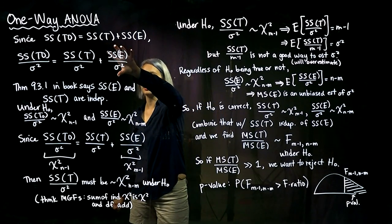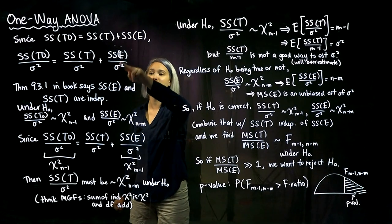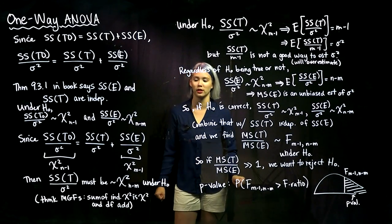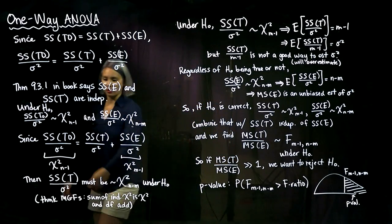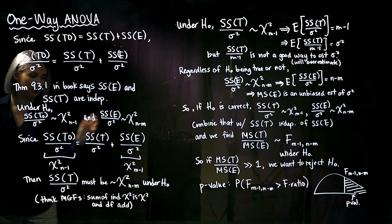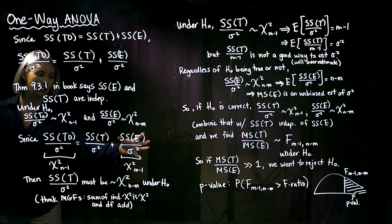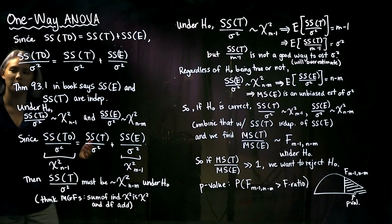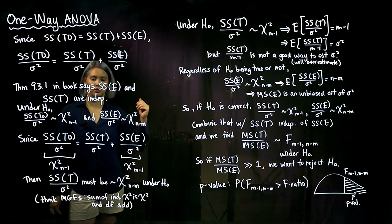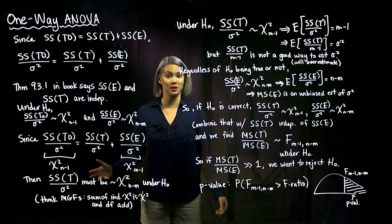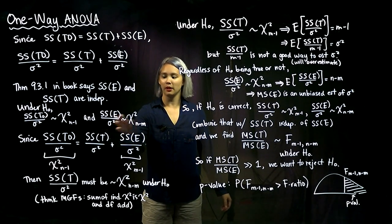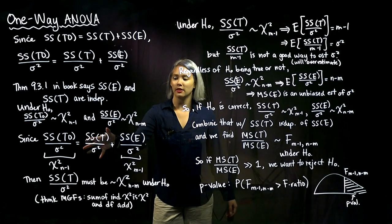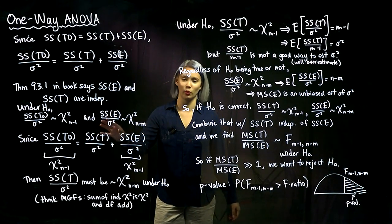Similarly, SSE divided by sigma-squared is also a chi-squared random variable with n minus 1 degrees of freedom. So this is a chi-squared random variable, and this is a chi-squared random variable, and they are independent of each other. If we remember back in our MGF — moment generating function — days from last semester, if we have a chi-squared random variable equal to something plus a chi-squared random variable, then that sum is also a chi-squared random variable.